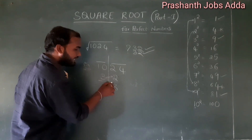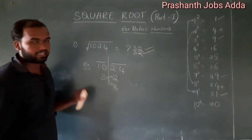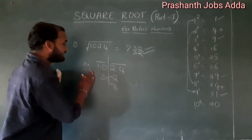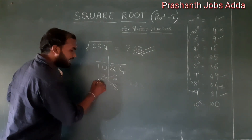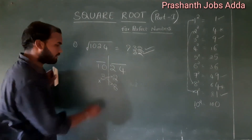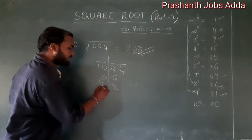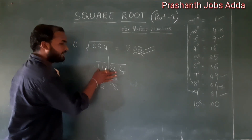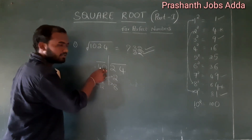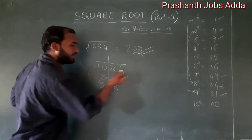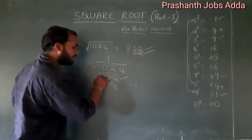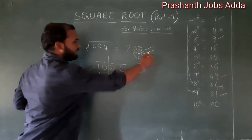Either 32 or 38. To choose between them, we check: take 3 and multiply by the next number, which is 4. Three times four is 12. Since 12 contains our number 10 (from 1024's first two digits), and 12 is bigger than 10, we choose the smaller number. So our answer is 32.